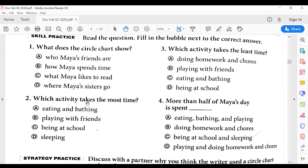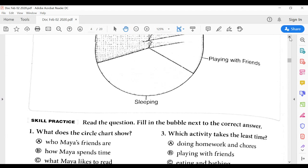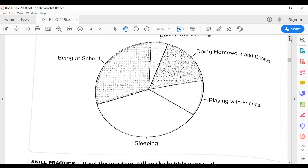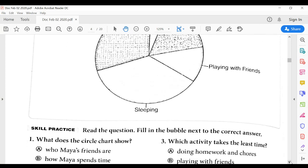Number two: which activity takes the most time? Eating and bathing, playing with friends, being at school, or sleeping? So to figure this answer out, you got to come back and look at your pie chart again and see which one of these is the biggest space, and that's what she spends the most time doing.